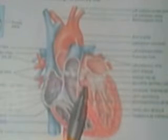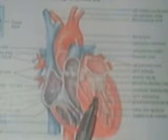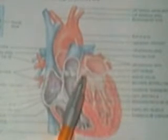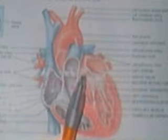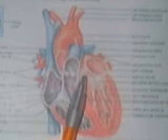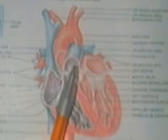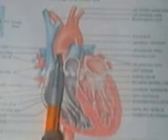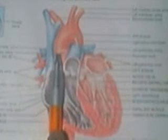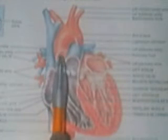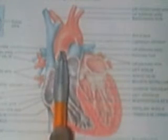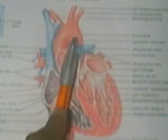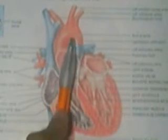Once the blood pressure increases in the left ventricle, it will force the valve to open and send the blood into the aorta, which is the red one right here. The blood first goes to the arc of the aorta — you can see that it's arched.